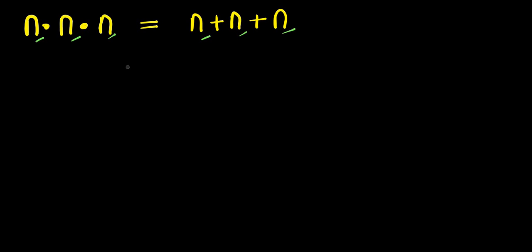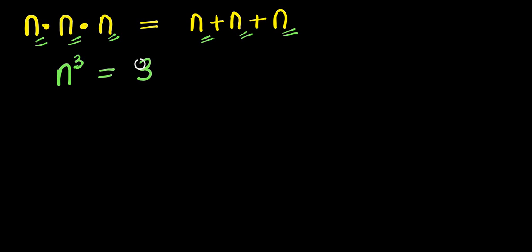We are going to start by multiplying this out. We have n times n times n, and this is n to the power of 3. And this equals n plus n plus n, which is 3n.